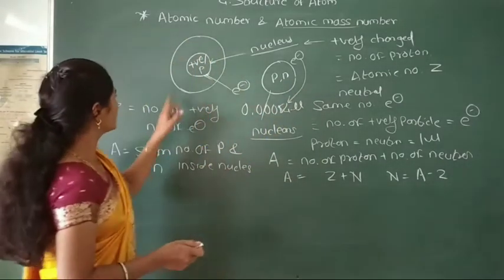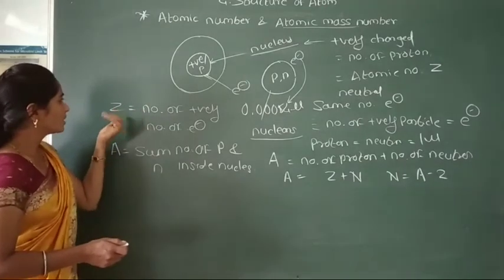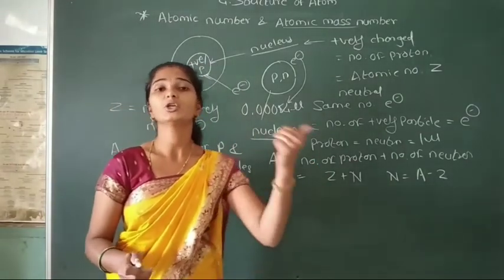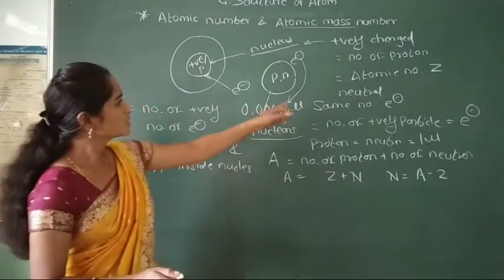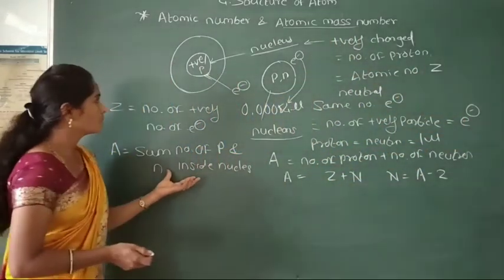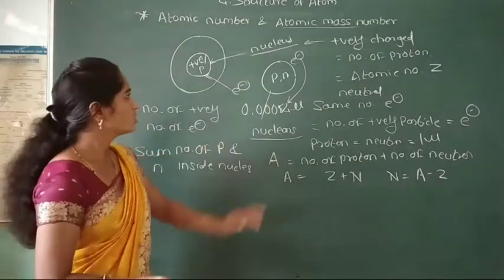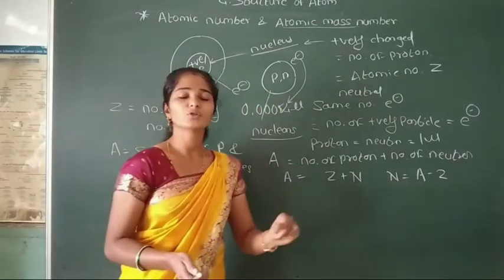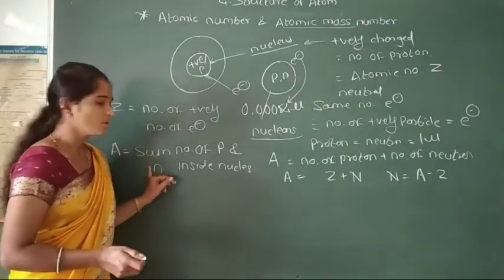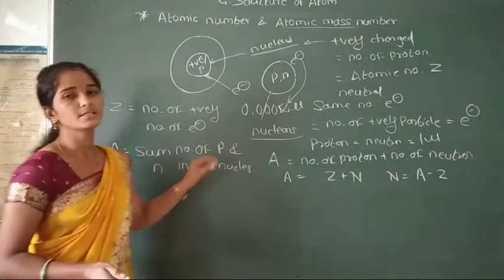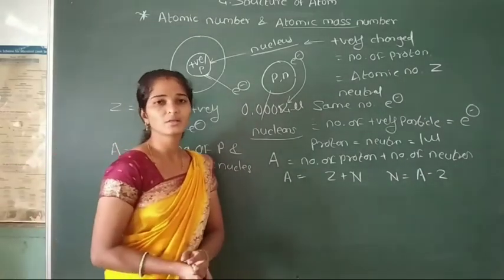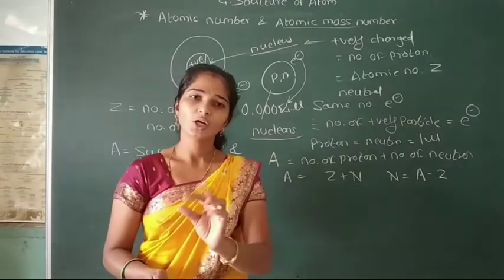So we have two terms: atomic number and atomic mass number. Atomic number, represented as Z, means the number of positively charged particles or number of protons present inside the nucleus — and is equal to the number of electrons. The atomic mass number is concentrated only in the nucleus, because the mass of any atom is defined by the mass of protons and neutrons, each equal to 1 mu. Atomic mass number A is also defined as the number of nucleons present inside the nucleus.